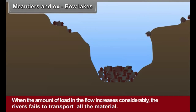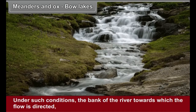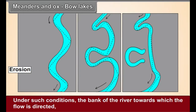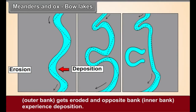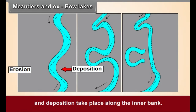Meanders and Oxbow Lakes: When the amount of load in the flow increases considerably, the river fails to transport all the material. Small elevated portions or obstacles can cause a change in the direction of the flow. Under such conditions, the bank of the river towards which the flow is directed, the outer bank, gets eroded and the opposite bank, the inner bank, experiences deposition. Thus, wherever the river changes its direction, erosion takes place along the outer bank and deposition takes place along the inner bank.